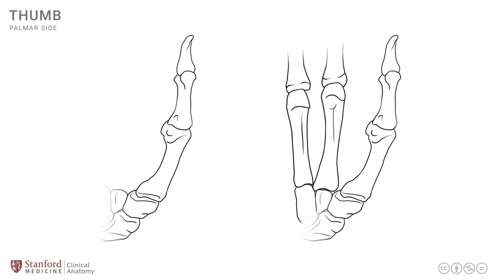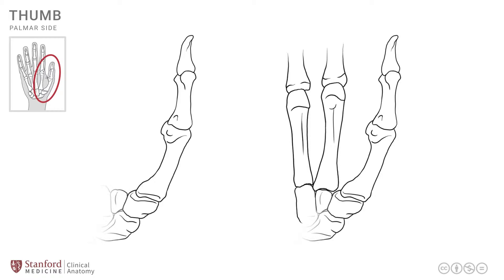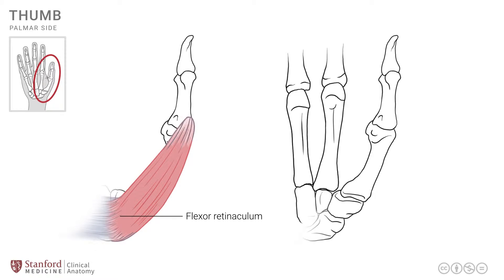Let's begin by looking at this line drawing of the base of the right thumb, magnified to show the thumb and adjacent digits. In the first image on the left side, we can put in the flexor retinaculum. Attaching onto this flexor retinaculum and the adjacent bone is the first muscle of the thenar group, known as the abductor pollicis brevis, or APB.